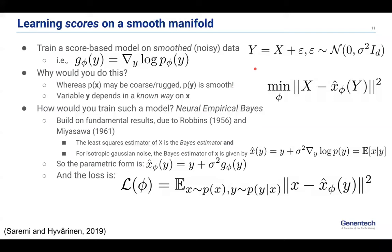This is the formalism that we start with for walk jump sampling. It's based on a concept called neural empirical Bayes. The key idea is very simple: we still want to train a score-based model, but we don't want to deal with many noise scales, a noise schedule, reverse diffusion, or forward diffusion complications. We just want a single noise scale that smooths our data and where we can train generative models. So we add isotropic Gaussian noise to the inputs and train a score-based model on this smooth, noisy data.